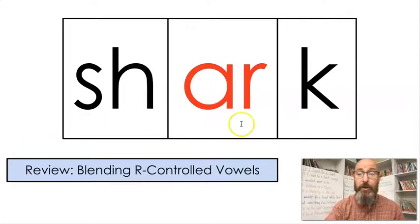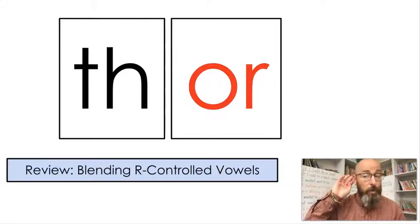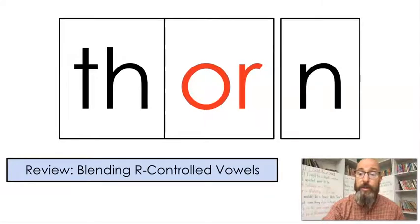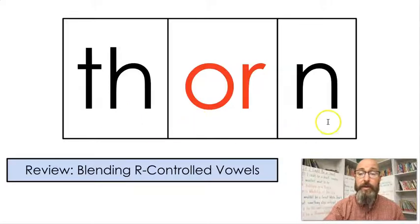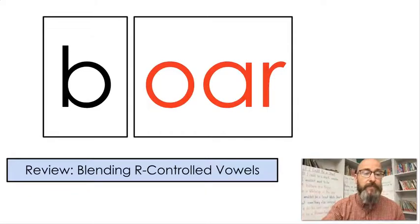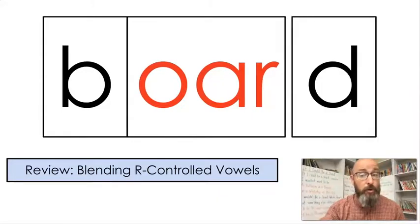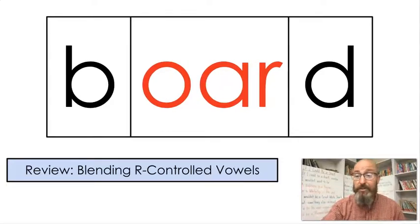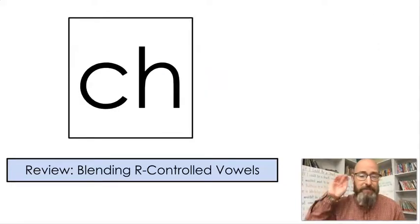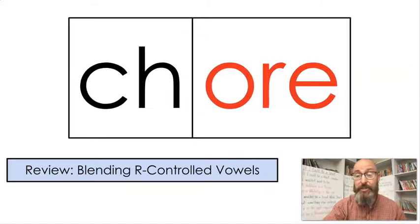Next: th — or — thorn. Roses have thorns on them. Next: b — oar — board. Your teacher writes stuff on the board. Next: ch — ore — chore. You may have a chore to do at home.